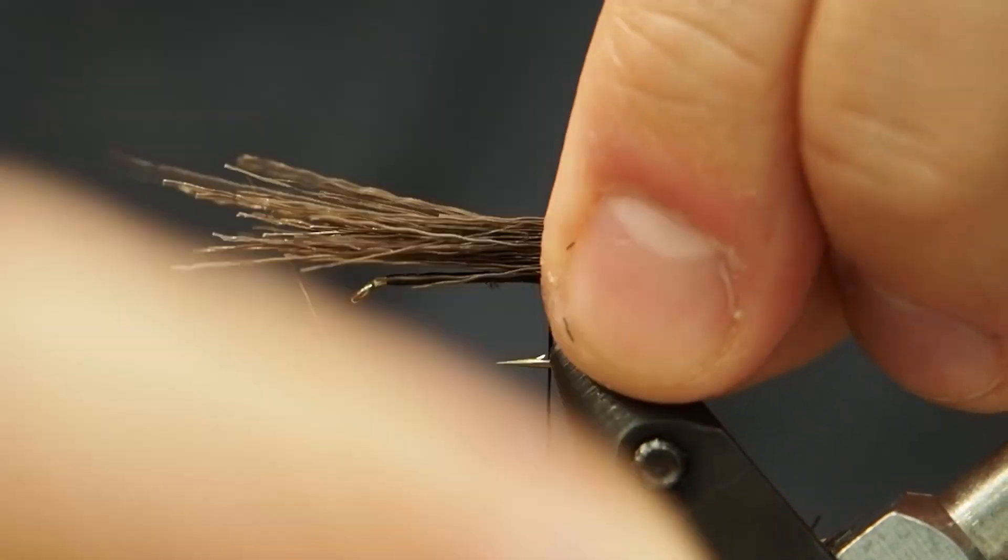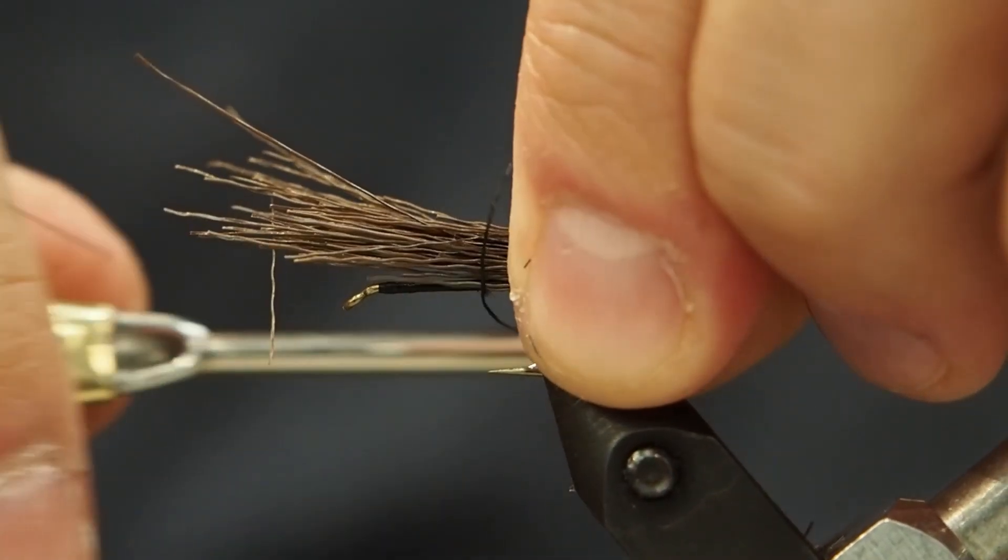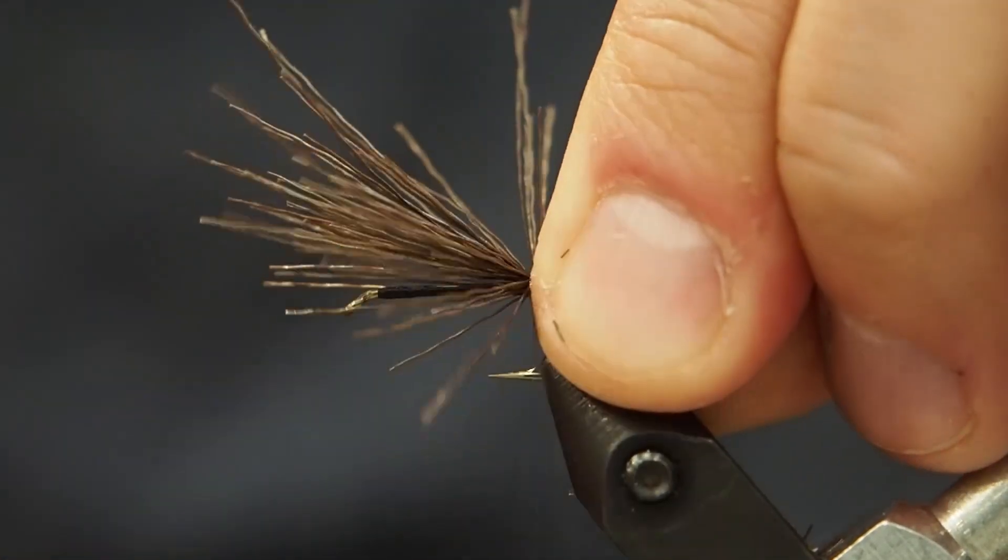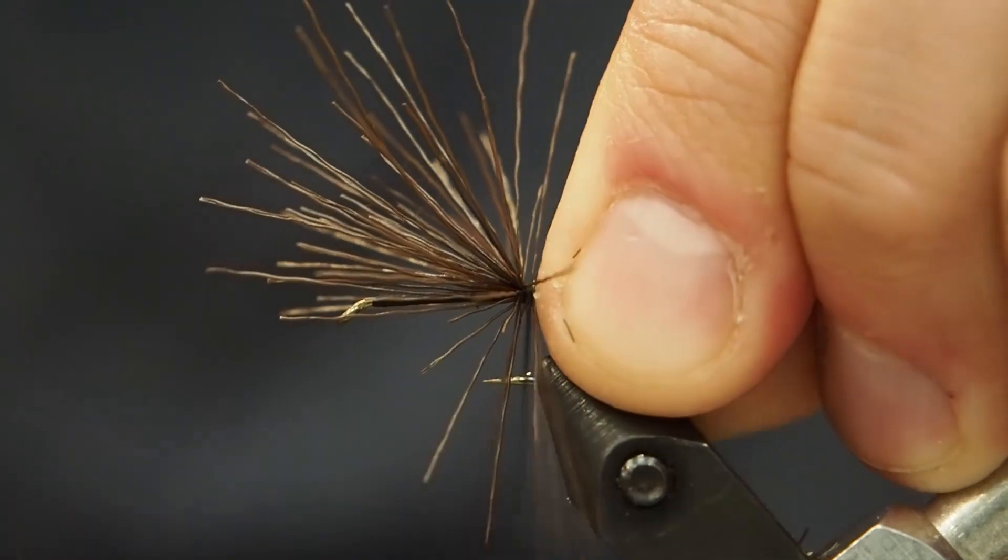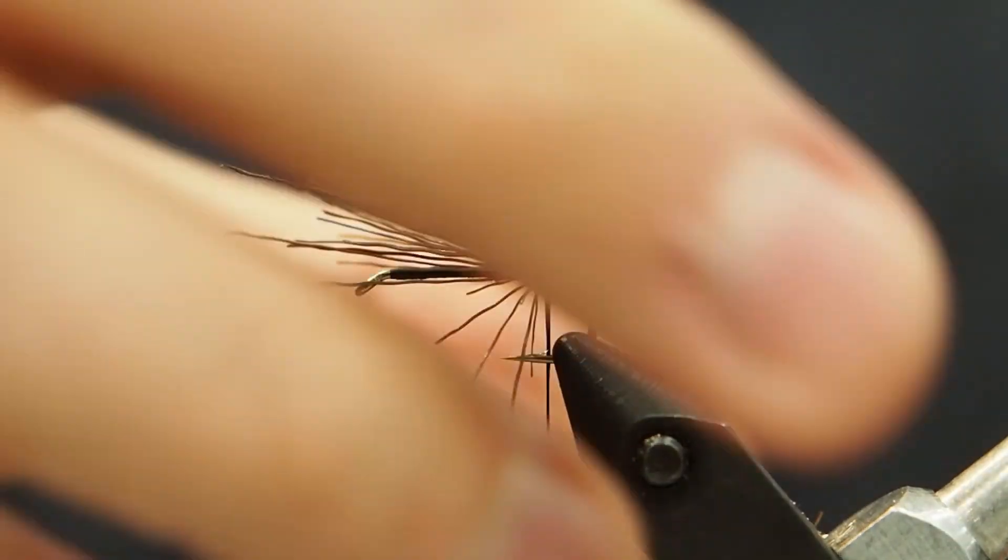We're going to tie this in at the very back of the hook right before the bend. Again, one loose wrap and then tighter wraps with deer hair. I'm pinching it to make sure that it doesn't wrap around the hook shank. That'll give us a nice bushy little tail.